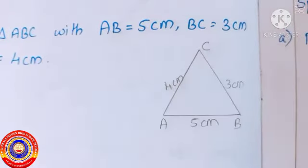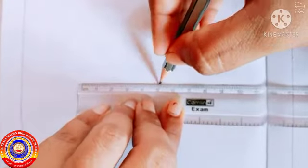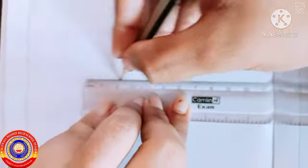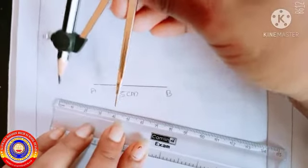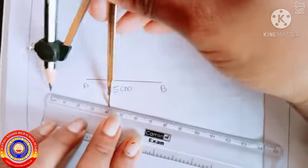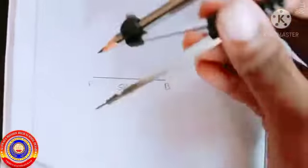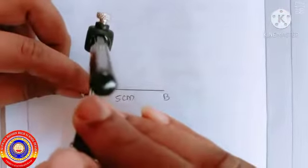Draw a line AB 5 centimeters long. C is 4 centimeters away from A, so draw a circle with the center A and radius 4 centimeters using a compass.